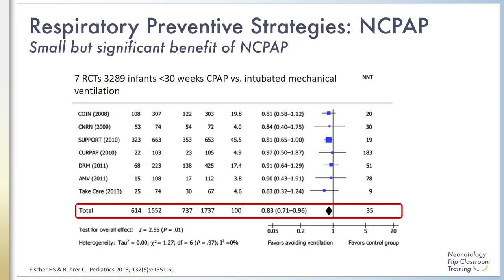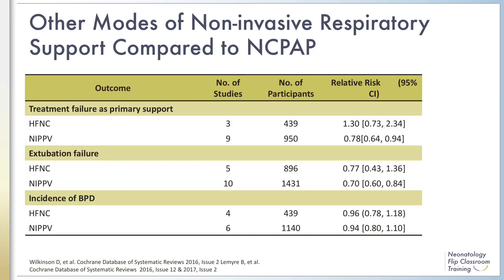A recent meta-analysis of seven randomized trials comparing CPAP and intubated mechanical ventilation at birth in infants born at less than 30 weeks demonstrated a small but significant benefit of CPAP in preventing the combined outcome of BPD or death. Two recent Cochrane reviews compared other modes of noninvasive ventilation to CPAP and found similar efficacy of high-flow nasal cannula and NIPPV for preventing BPD in preterm infants. In addition, synchronized NIPPV seems to be more effective than CPAP as primary respiratory support after birth, with less need for intubation and better prevention of extubation failure.